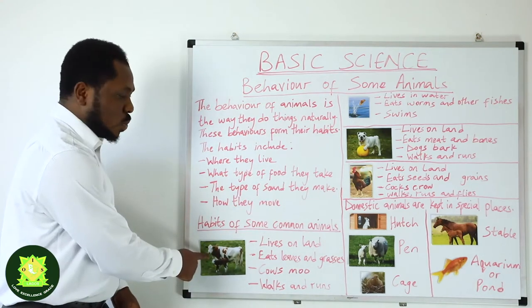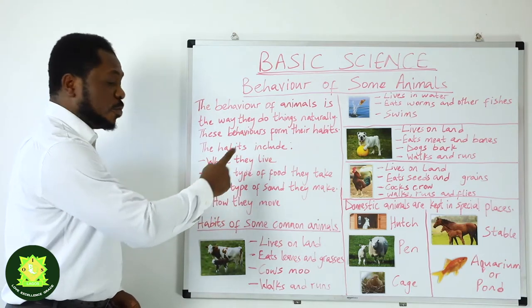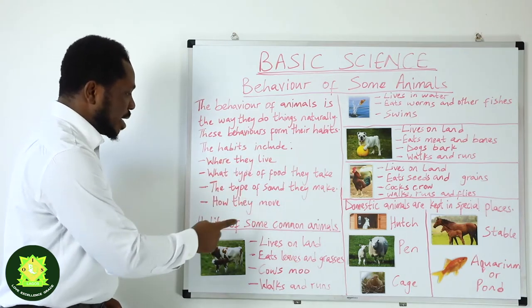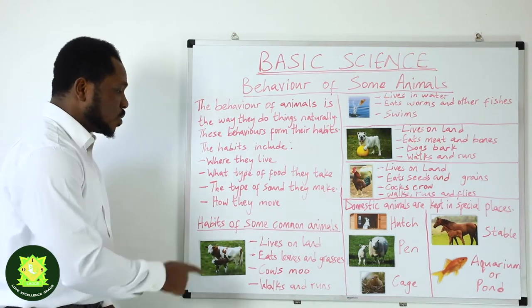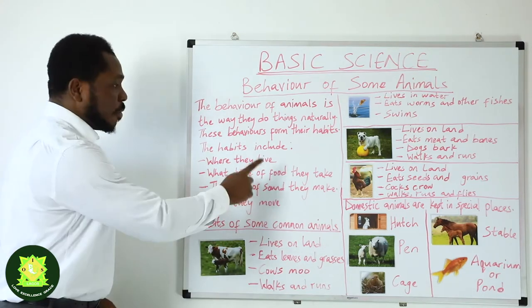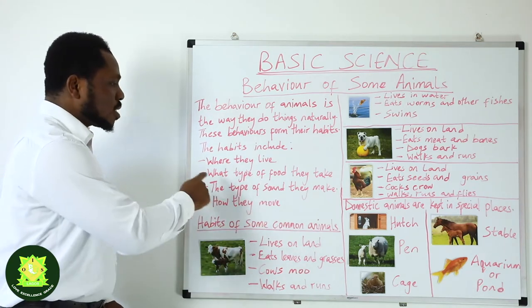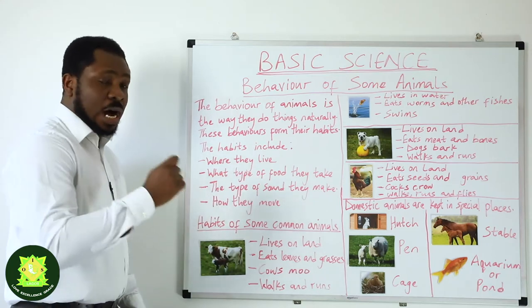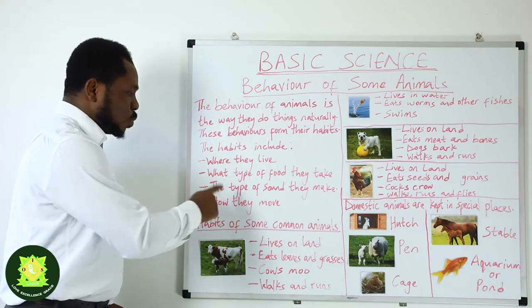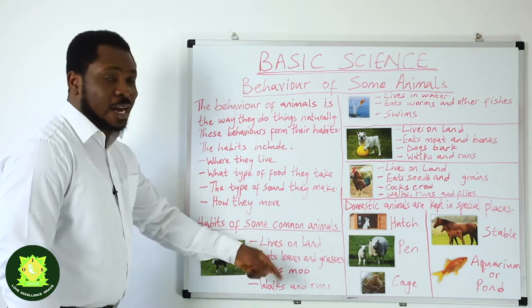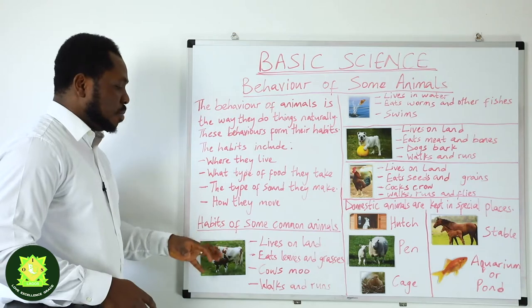Now this is the cow and we are going to be talking about where they live, what type of food they take, the type of sound they make, and how they move. Where do cows live? Cows live on land. What type of food do they eat? They eat leaves and grasses. What type of sound do they make? Cows moo. How do they move? They walk and run. These are the common habits of the cow.